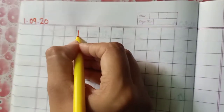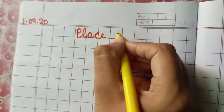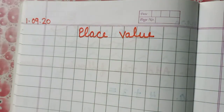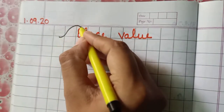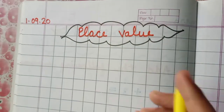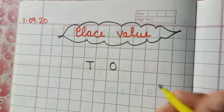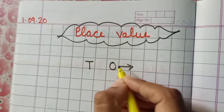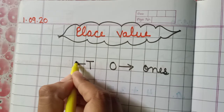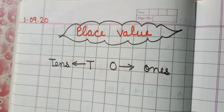In the first line, write down 'Place Value'. Make a cloud like this. Now write: O stands for ones, and T stands for tens.